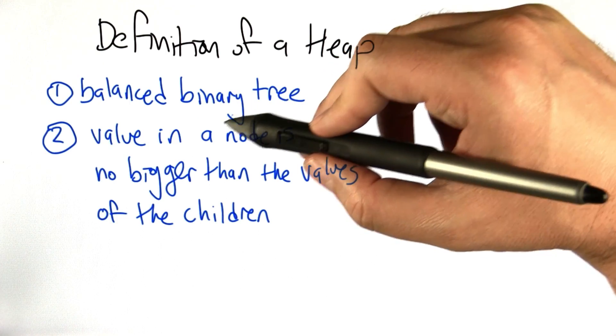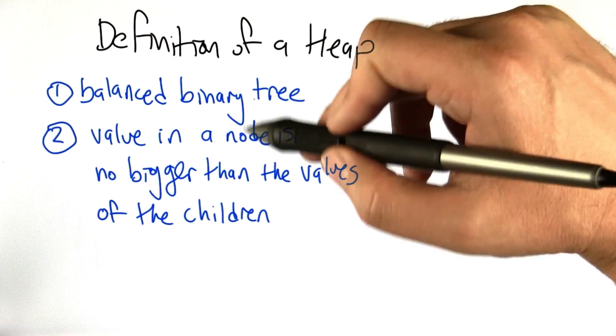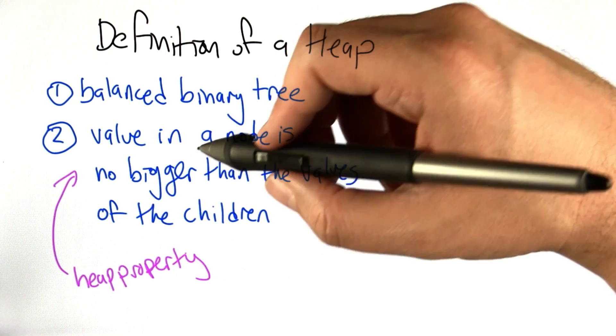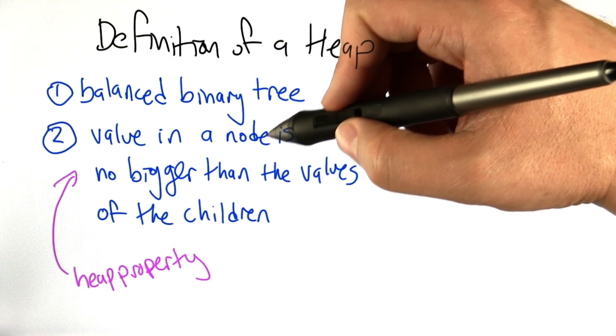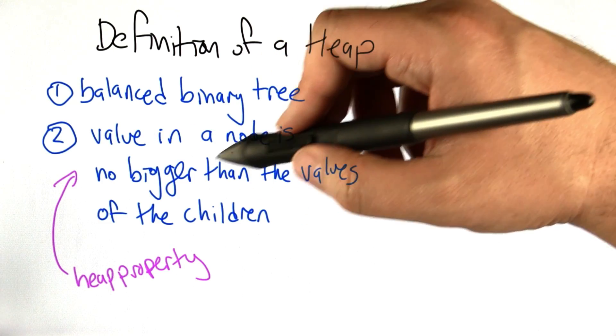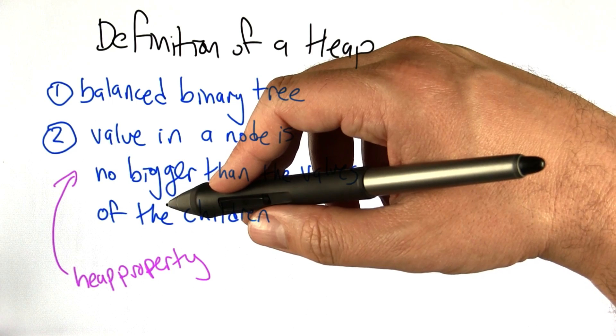And each of the nodes has a value in it, and for the heap property to be satisfied, the value in a node has to be, in every node in the tree, has to be no bigger than the values in the children.